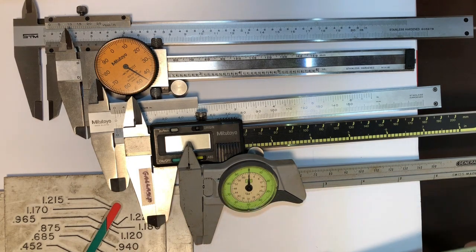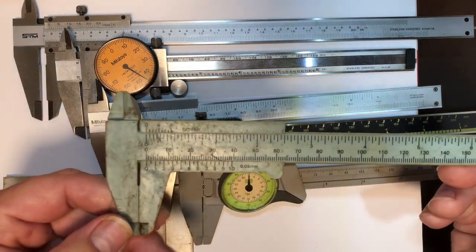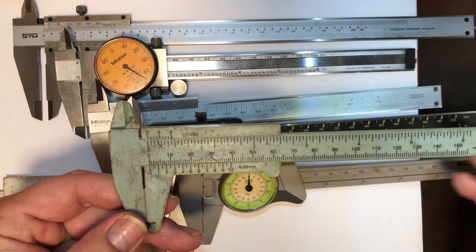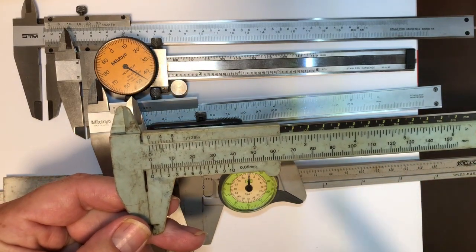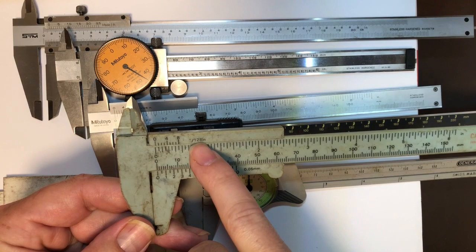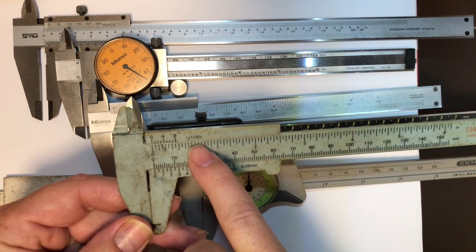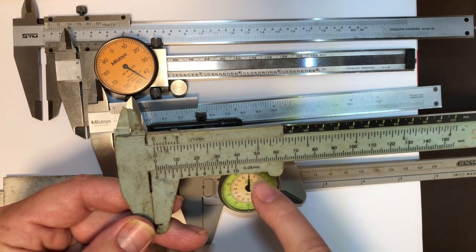Let's get started. This style here, pretty basic, reads not in decimal but in 1/128 of an inch. You need to see this small number whenever you're looking at a vernier type scale to see what number you're reading to.